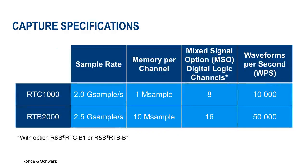Looking at the capture-oriented specs, across the board the RTB performs at a higher level. We see a 25% higher sample rate from the RTB, better memory, and a much higher update rate compared to the RTC — a massive upgrade with five times as many waveforms per second. The RTB is going to be better for detecting signal anomalies and faults. Comparatively, the RTC isn't as capable, but provides what it does at an excellent value.